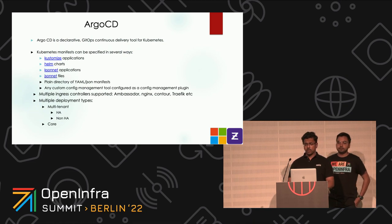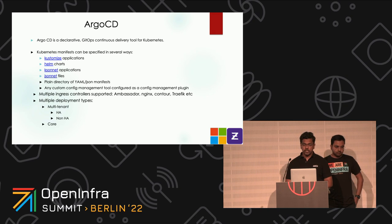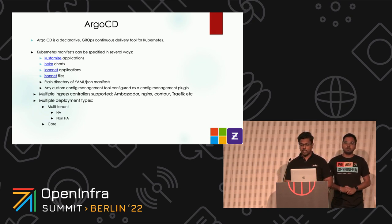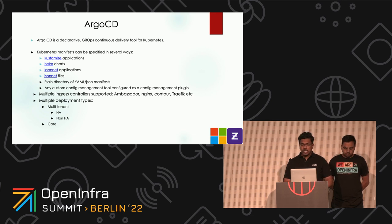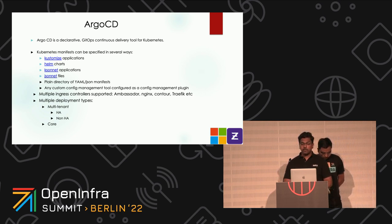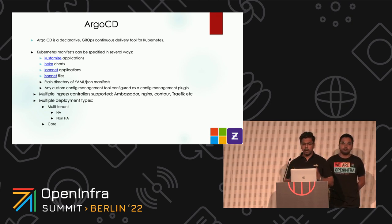Thanks, Nishant. Argo CD is a very widely used tool, one of the many open-source tools that we contribute to, customize, and use at Zeta Tech. It allows you to use any Git-based repository, whether it's GitHub, GitLab, or Bitbucket. With respect to Kubernetes, the manifests can be specified in any number of ways — Kustomize, Helm, or plain vanilla YAML or JSON manifests. It also supports any custom management tool, which can be configured as a plugin for config management.